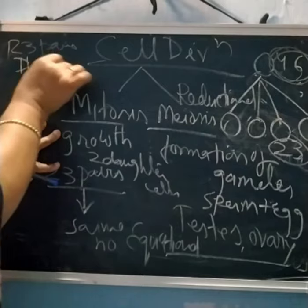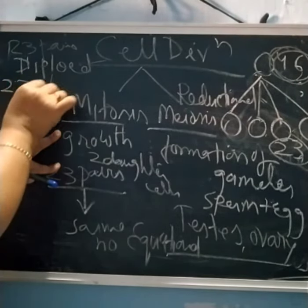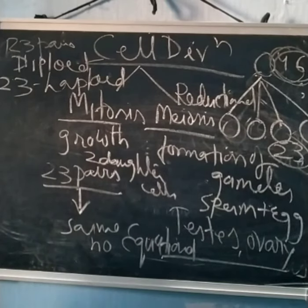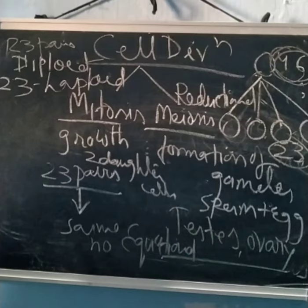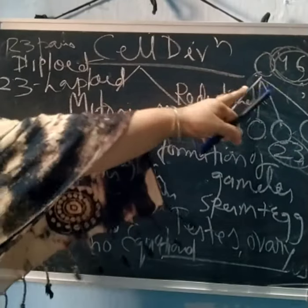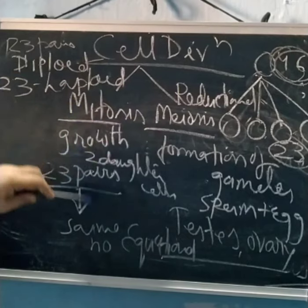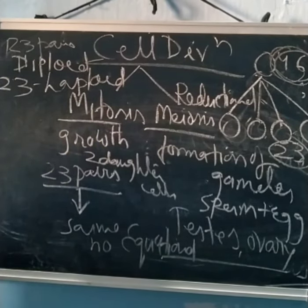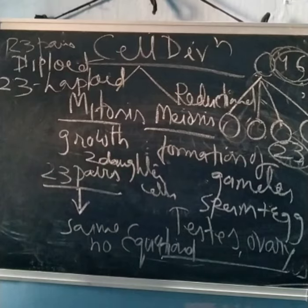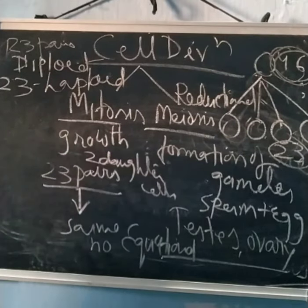If we write 23 pairs, that is diploid; if we write 23 only, that is haploid. Haploid has one set of chromosomes; diploid has the paired set. To summarize: mitosis keeps the chromosome number the same — diploid to diploid — and meiosis reduces it from diploid to haploid. That completes our discussion of cell organelles and cell division. Any doubts can be cleared in the online class.